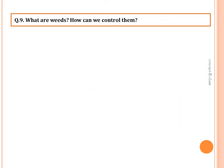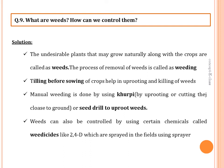Question nine: what are weeds and how can we control them? Undesirable plants that grow along with the crops are called weeds, and the process of removing them is called weeding. Weeds can be controlled by tilling before sowing — preparing the soil using a seed drill or plough helps in uprooting and killing the weeds.